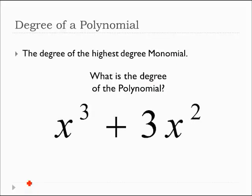How about this one? This is a 3rd degree polynomial. Remember, it's the degree of the highest degree of monomial. I have one monomial here, and I've got one here. This one has a degree of 3. This one has a degree of 2. Which one is the highest degree? 3. So the degree of the polynomial, this is a 3rd degree polynomial.